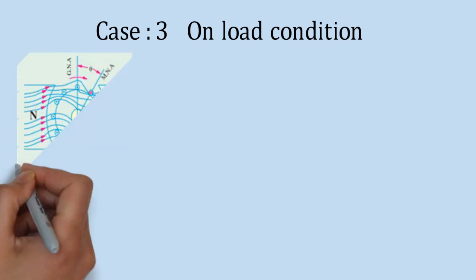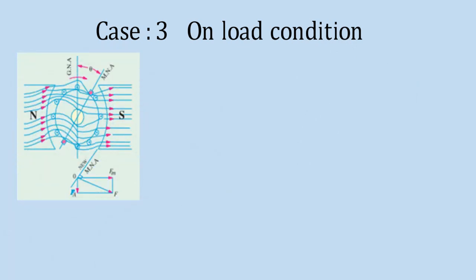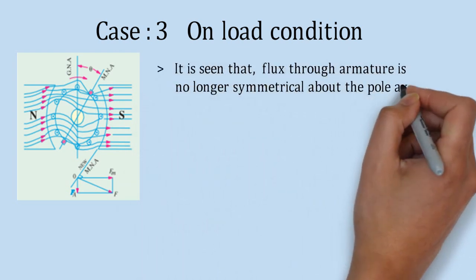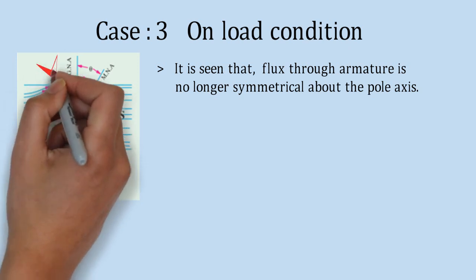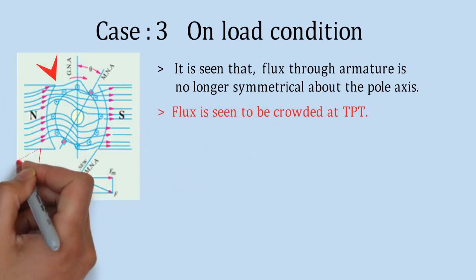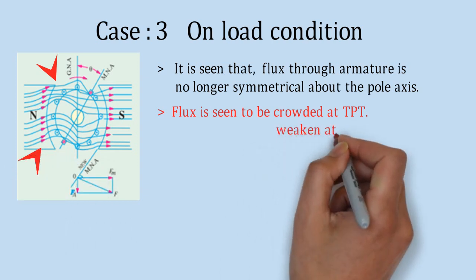Here, it can be noticed that armature flux is no more symmetrical now. More amount of flux density is accounted near TPT due to combined flux effects. Same as, least flux density can be seen near LPT.